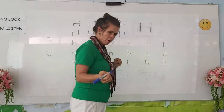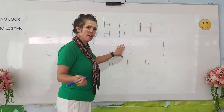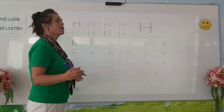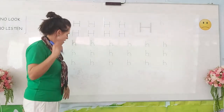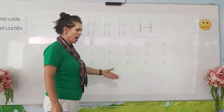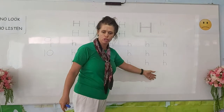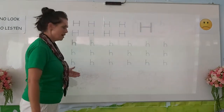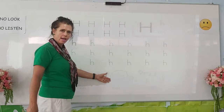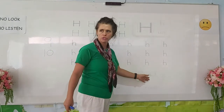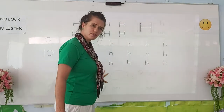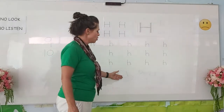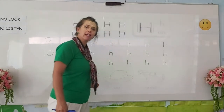We are finished tracing our H. Now we can go through the pictures: hen, hat, and horse. Once more: hen, hat, horse. If you are finished writing, you can colour your pictures any colour.